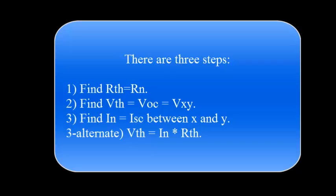That is, if you connect a wire between points X and Y in the original circuit and then find the current in that wire, that's called the short circuit current — it's also equal to the Norton current. As an alternative to the third step, you could use this equation. From steps one and two, when you already know the Thevenin voltage and the Thevenin resistance, you can use this equation to calculate the Norton current.